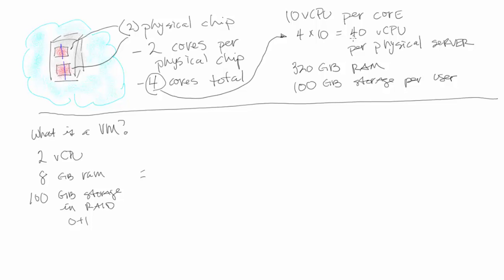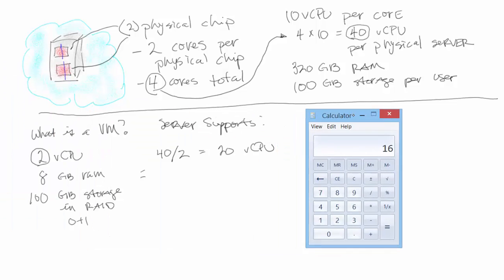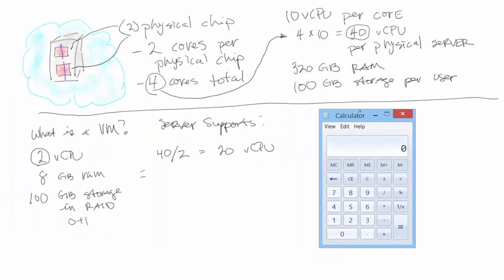Let's do some of the math. We have two virtual CPUs per VM and 40 total virtual CPUs — that's going to give us a total of 20 VMs. So we're going to have a total of 20 virtual machines.